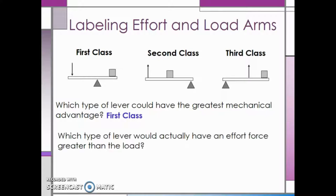Next, which type of lever would actually have an effort force greater than the load? This would be a third class lever. Since the effort arm is always smaller than the load arm, the mechanical advantage is going to be very small. Remember, the mechanical advantage of third class levers are actually less than one, which means that the sacrifice is the force, but the advantage is the distance traveled.